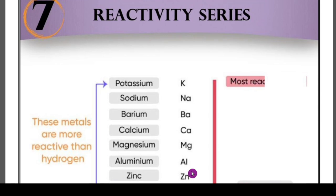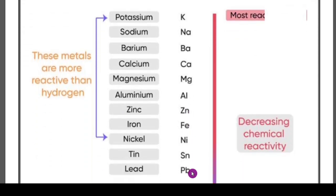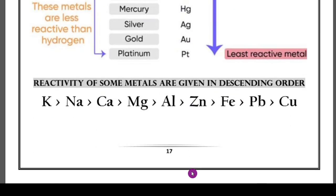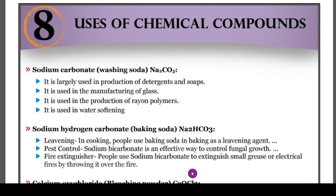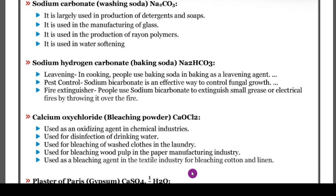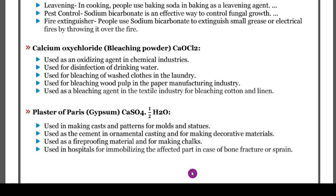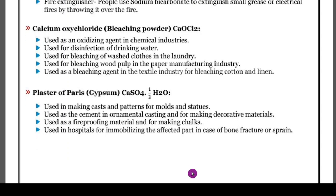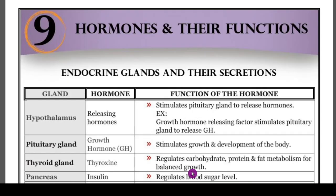From the metals and non-metals chapter, the important concept is the reactivity series — you should know which is the highest reactive metal and which is the lowest reactive element. Based on that you may get one question. The next topic is uses of chemical compounds — 100 percent, out of five you may get one question on uses of chemical compounds. I have given sodium carbonate, baking soda, bleaching powder, and gypsum (plaster of Paris) — four points each is enough to score two marks.